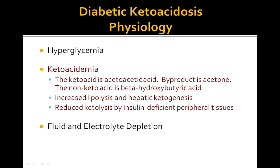Ketoacidemia is one of the key characteristics of diabetic ketoacidosis. Patients present with ketones in the urine specimen. The ketoacid is acetoacetic acid and its byproduct is acetone. The non-ketoacid is beta-hydroxybutyric acid. Increased lipolysis and hepatic ketogenesis cause the ketoacidemia, along with reduced ketolysis by the insulin-deficient peripheral tissues. There is decreased clearance of ketones and increased production by the liver.